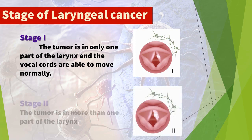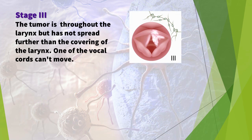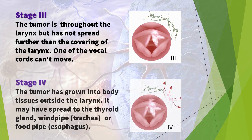Stage 2: the tumor is in more than one part of the larynx. Stage 3: the tumor is throughout the larynx but has not spread beyond the covering of the larynx; one of the vocal cords cannot move, and there are cancer cells in one lymph node on the same side of the neck as the cancer, but the node is less than three centimeters across.